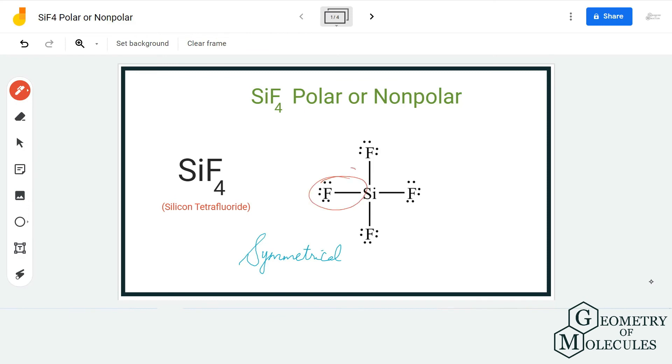As these bonds are polar, there will be a dipole moment in the direction of fluorine atoms. So the direction of the dipole moment will be from silicon to fluorine atom, and this will be the same for all four atoms of fluorine.